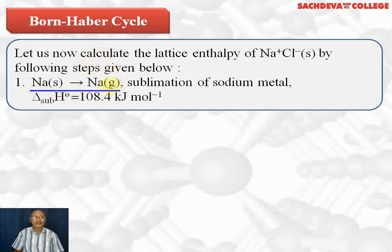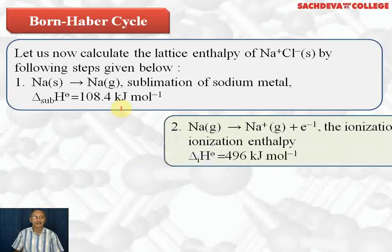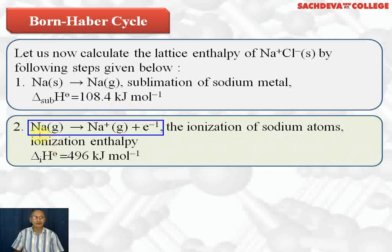The energy required to convert sodium solid to sodium gas is called sublimation energy, and delta H of sublimation is equal to 108.4 kilojoules per mole. This is the first step in the formation of sodium chloride from sodium solid and chlorine gas. The second step is that sodium gas — sodium atom in gaseous state — loses one electron to form sodium ion in gaseous state.